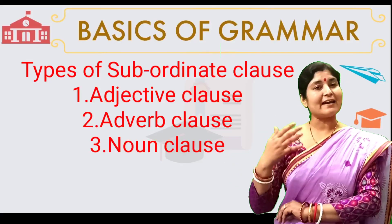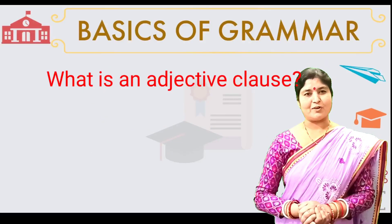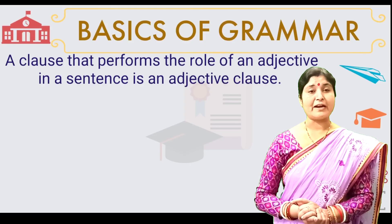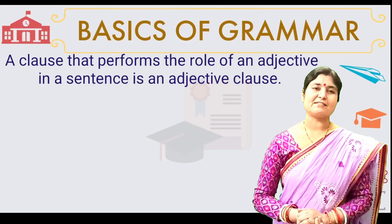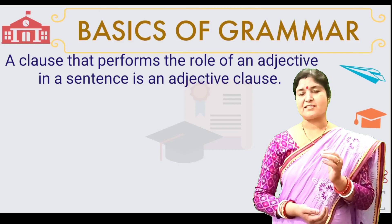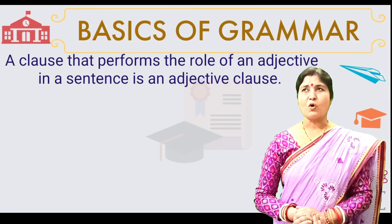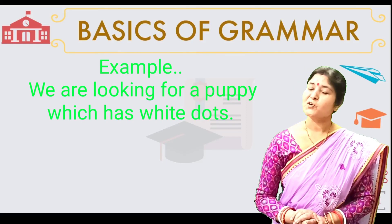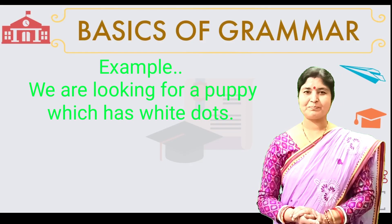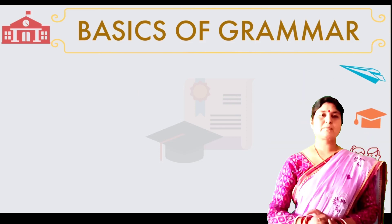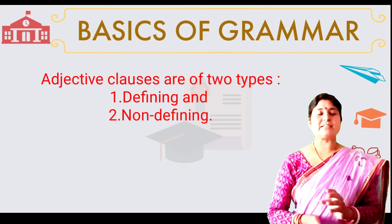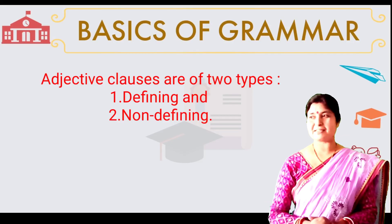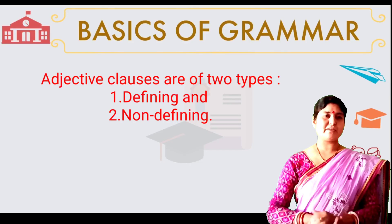So what is an Adjective Clause? A clause that performs the role of an adjective in a sentence is known as an Adjective Clause. For example, 'We are looking for a clause which has white dots.' This Adjective Clause is of two types: the Defining Clause and the Non-defining Clause.